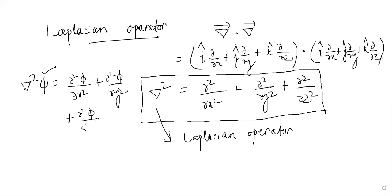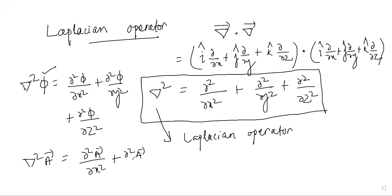Similarly, if you operate the Laplacian on a vector quantity A, you get ∇²A = ∂²A/∂x² + ∂²A/∂y² + ∂²A/∂z². Simply write the value of φ or vector A as a function of x, y, z, then substitute into ∇²φ or ∇²A to get the result.